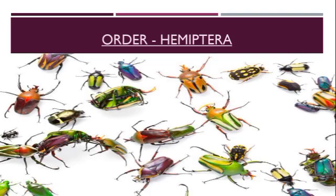As they suck the sap, they act as pests for various economic crops, causing damage to the plant. Some act as vectors for a variety of pathogens causing diseases in plants and animals, because they suck sap and blood. They are primarily terrestrial, but some of them are adapted secondarily to aquatic or semi-aquatic life.